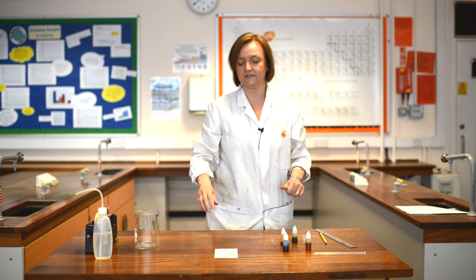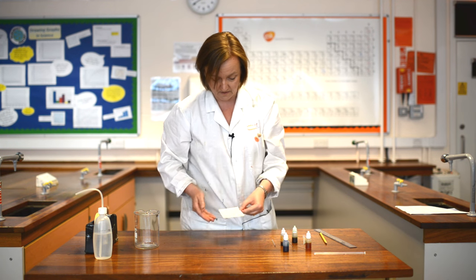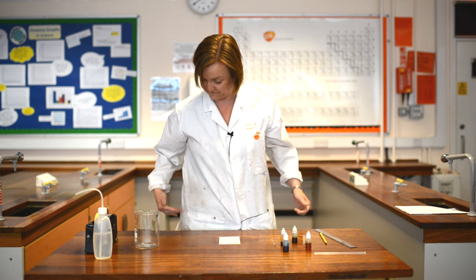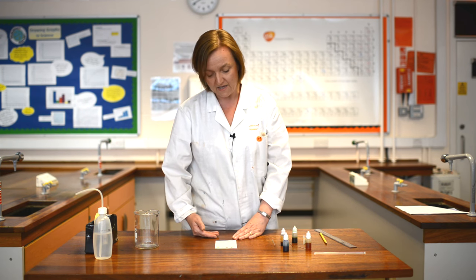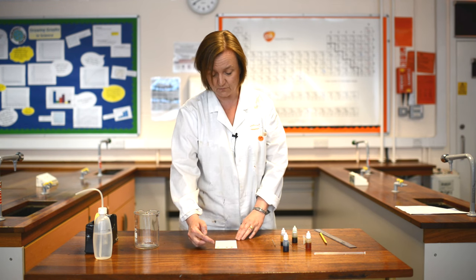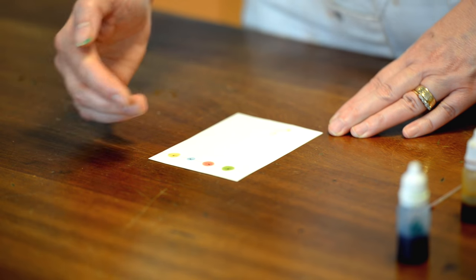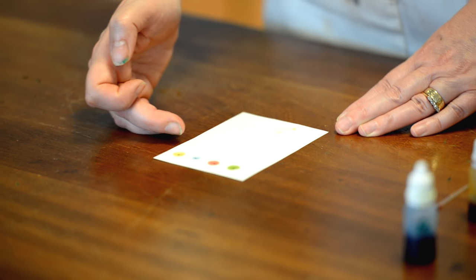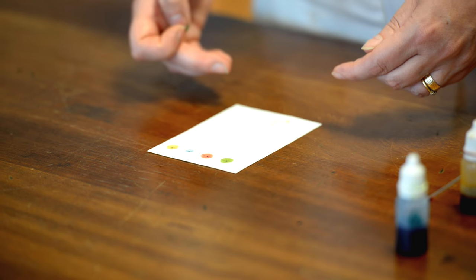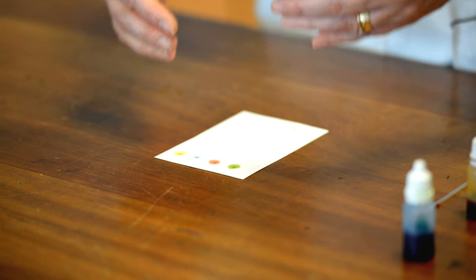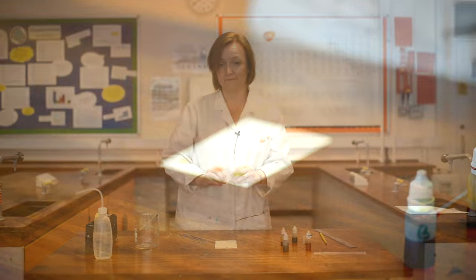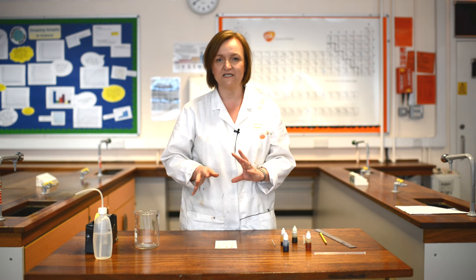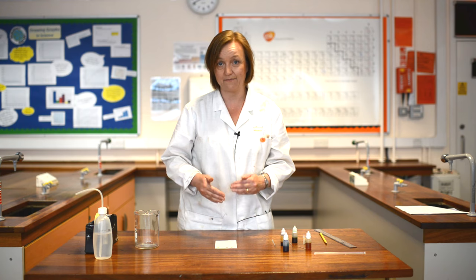Okay, so this is the stationary phase. The dots are on the stationary phase. I'm now going to introduce them to the mobile phase. The mobile phase is going to move, and this is going to be water. The water is going to be put at the very bottom of the paper and will be drawn up by capillary action through the chromatography paper. As it does so, the colors in the food dye are going to either want to dissolve into the water and move with it or stay on the paper. It's their relative affinities for either moving with the water or staying on the paper that makes them separate out.